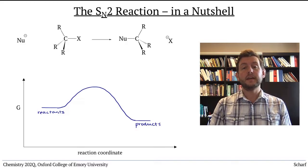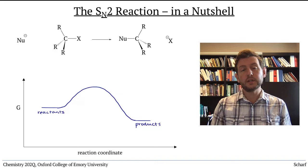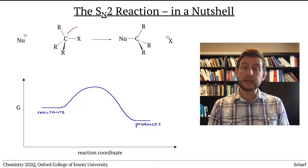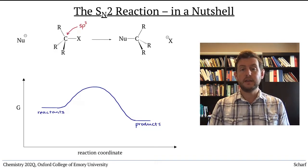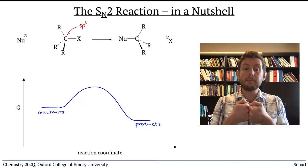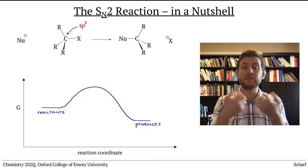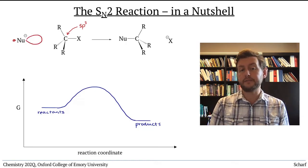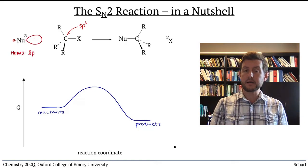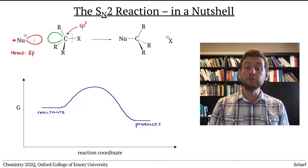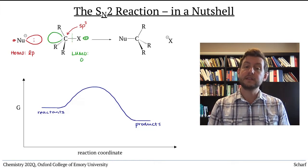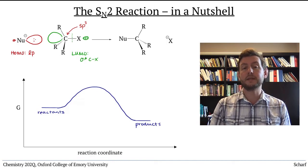SN2 reactions involve nucleophilic substitution at an sp3 hybridized carbon. They occur in a one-step mechanism in which the nucleophile and electrophile collide with each other, so that the HOMO of the nucleophile, usually a lone pair, overlaps with the LUMO of the electrophile, the sigma star orbital between the carbon and the leaving group.